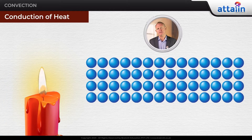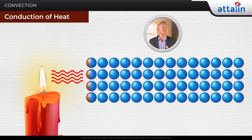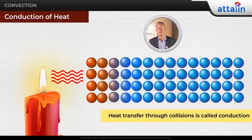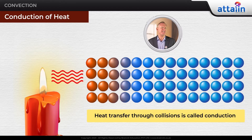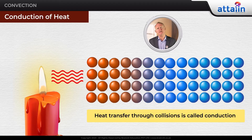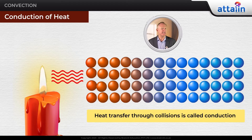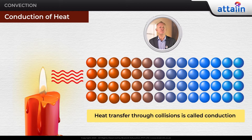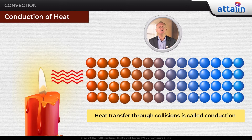When we heat up a solid, the particles near the heat source start vibrating vigorously. The collisions increase. As the particles collide with the next ones, they transfer their kinetic energy to the next particles. The average kinetic energy of the solid keeps increasing. This method of heat transfer through collisions is called conduction.